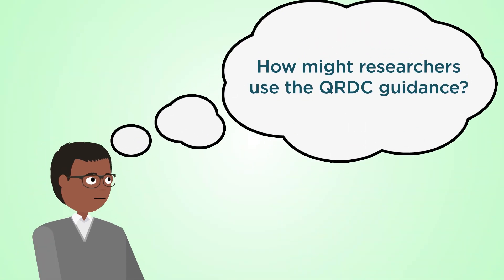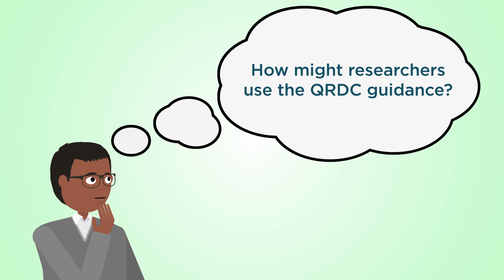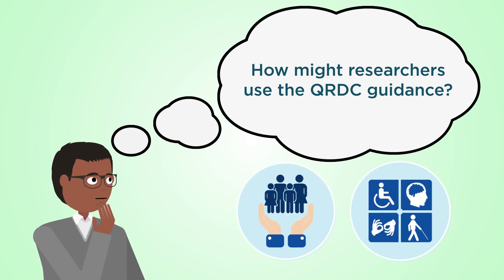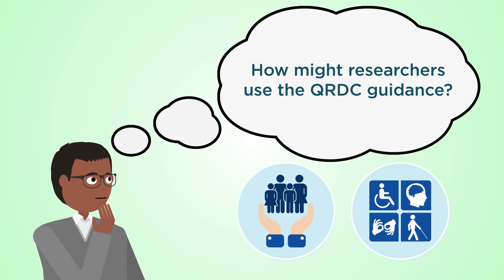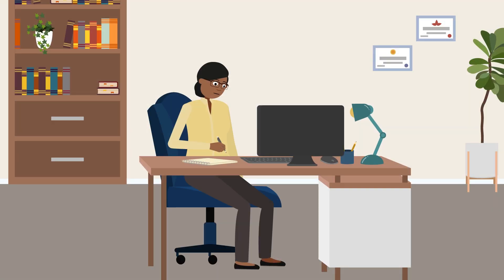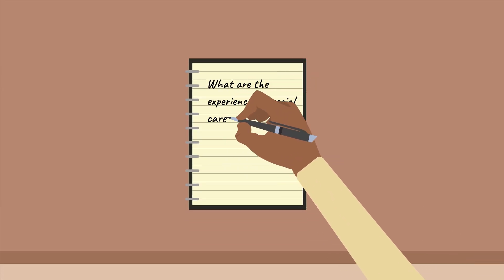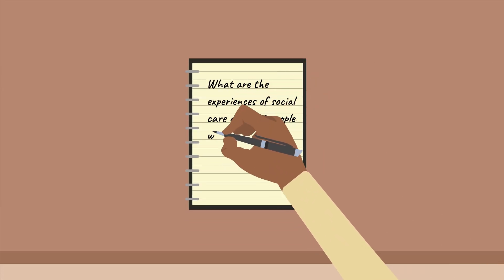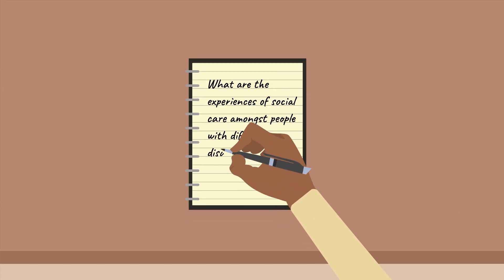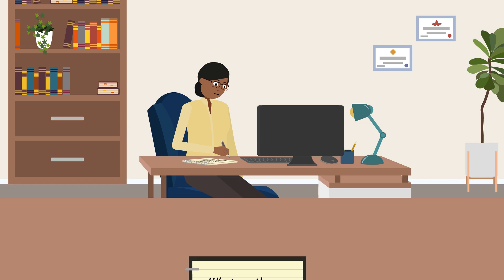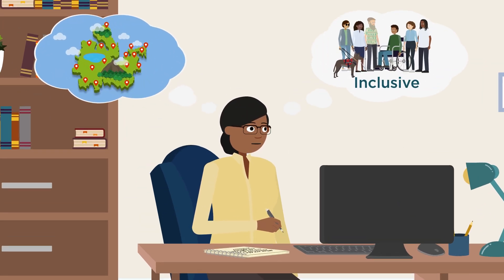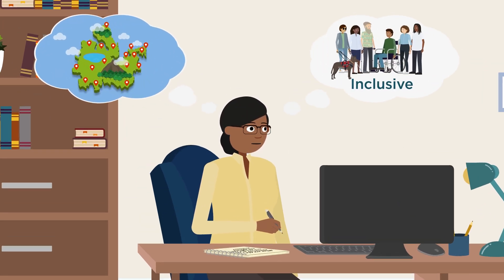How might researchers use the QRDC guidance to study social care and disability? A researcher is designing a study about the experiences of social care amongst people with different disabilities. They are considering remote methods to reach more participants and maximise inclusivity.